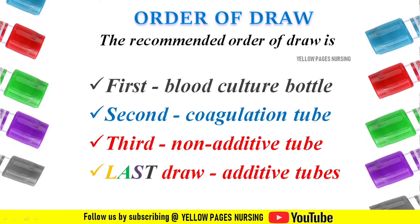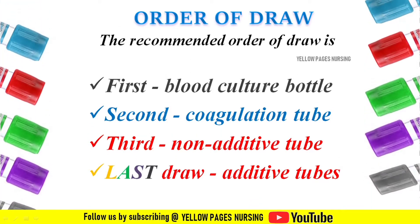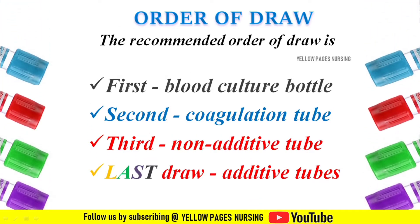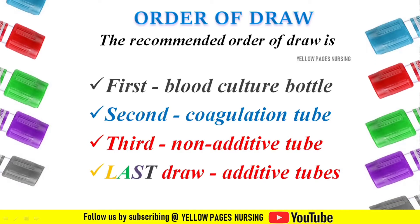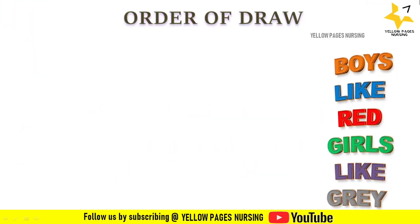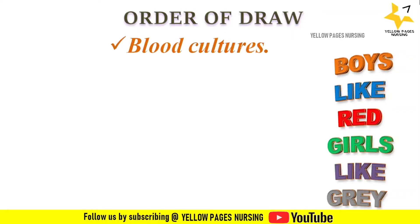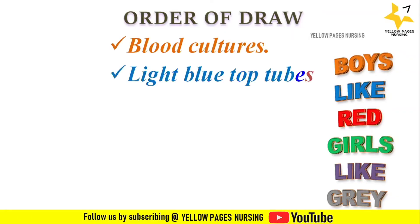For easy understanding, there is a mnemonic: 'Boys Like Red Girls Like Gray.' The order of draw goes — blood cultures, light blue top tubes, red top tubes, green top tubes, lavender top tubes, and gray top tubes.